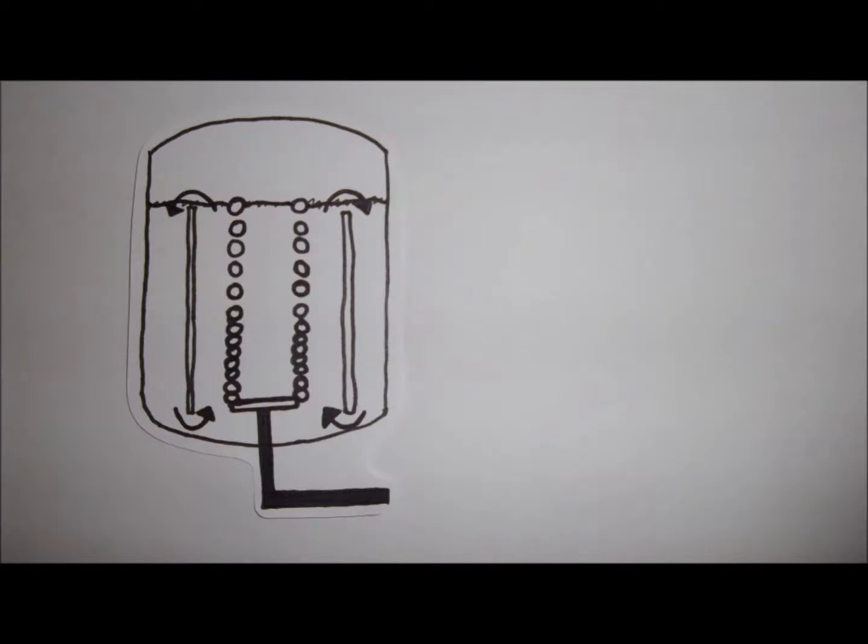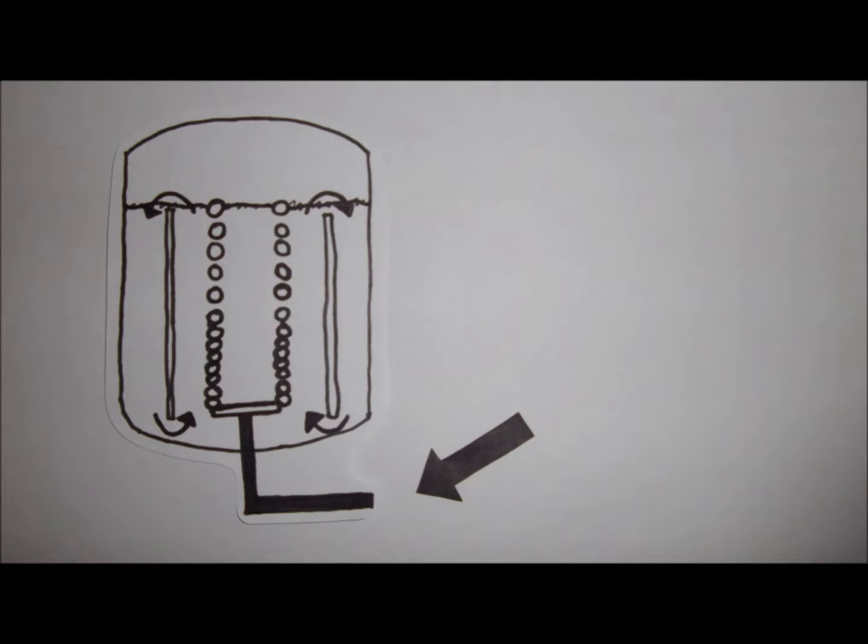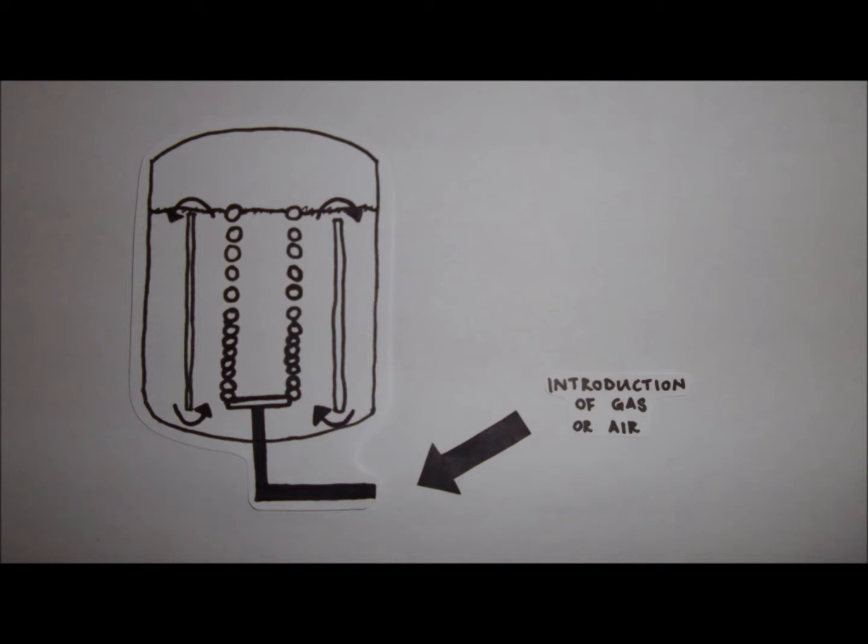An airlift bioreactor is a type of bioreactor in which the reaction medium is constantly mixed by the movement of gas or air being introduced at the base of the reactor by a draft tube. The rising air drags the surrounding fluid in the bioreactor upwards and it is sufficient to stir up the contents. It employs continuous culture.